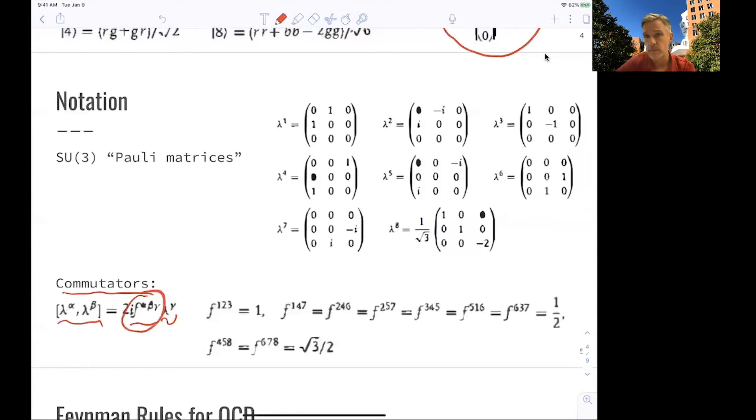And so it means that there is 512 of those constants. Most of them are 0. And the ones which are not 0, they're listed here, or combinations of those.